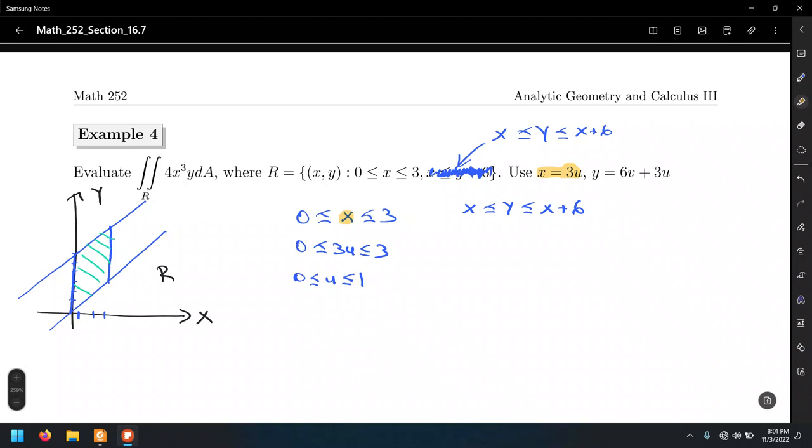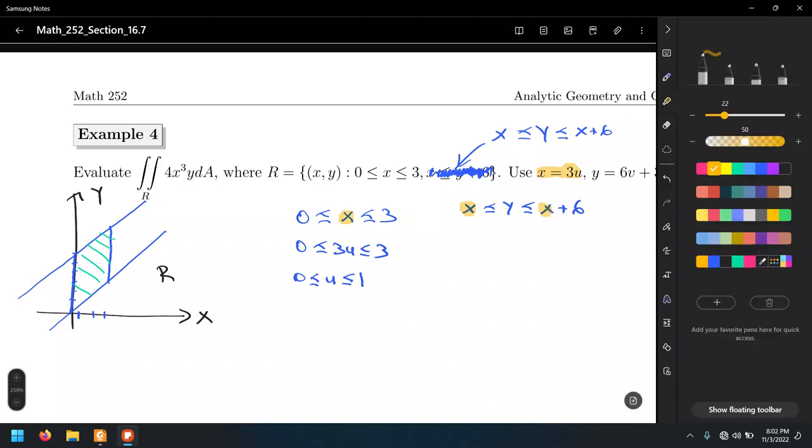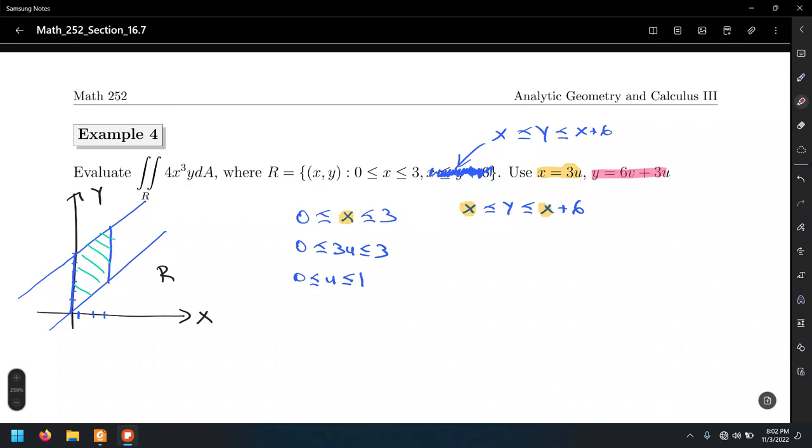We're going to substitute X equals 3u here and here, but we will substitute Y equals 6v plus 3u. So that's 3u less than or equal 6v plus 3u less than or equal 3u plus 6.